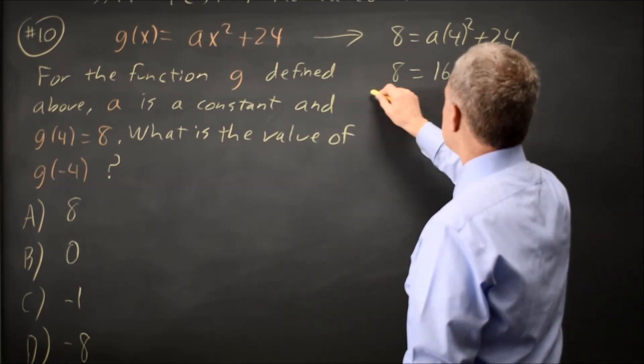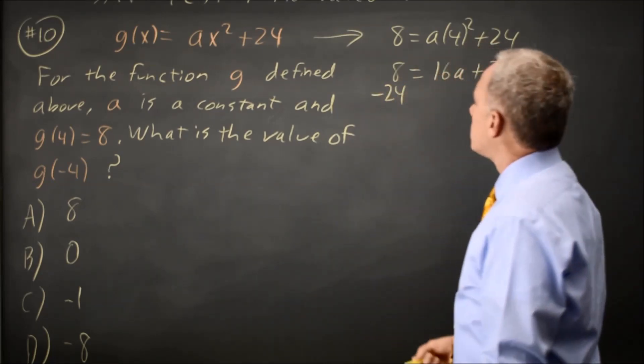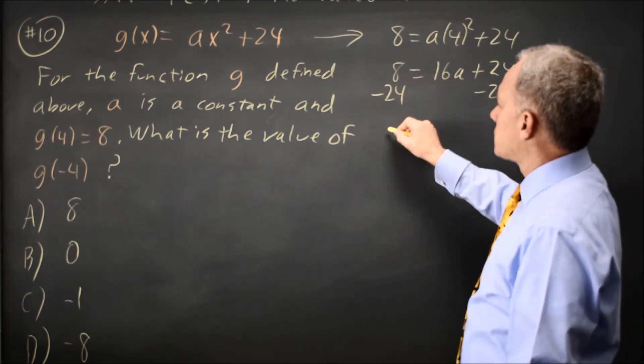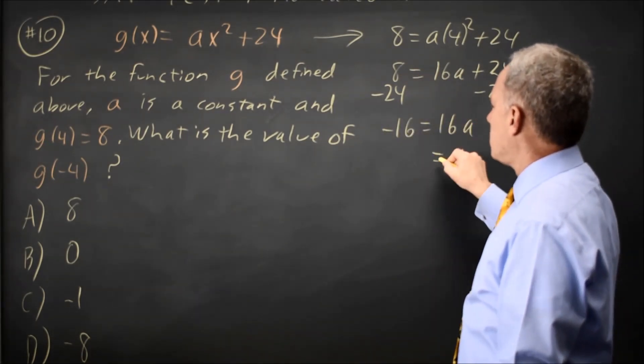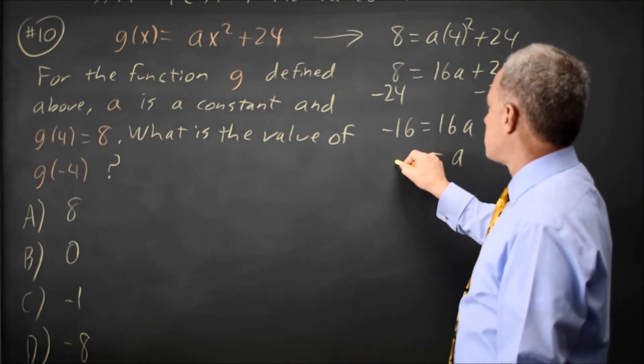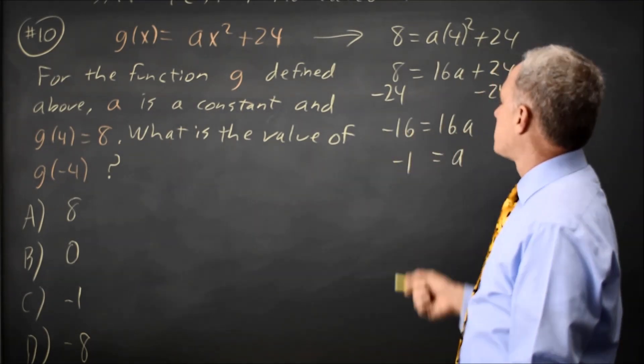Subtract 24 from both sides of the equation. Remember, you always do the same thing to both sides of an equation. 8 minus 24 is negative 16, and that is 16a, so a equals negative 16 over 16 is negative 1, if you divide both sides by 16.